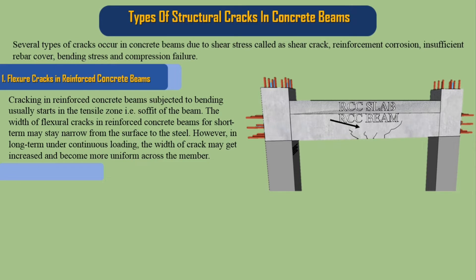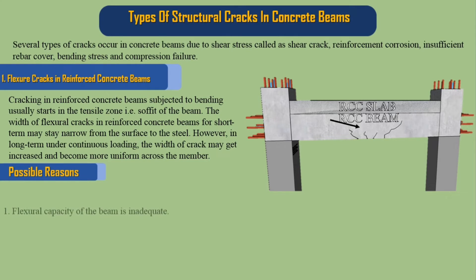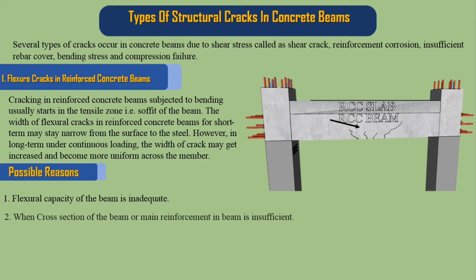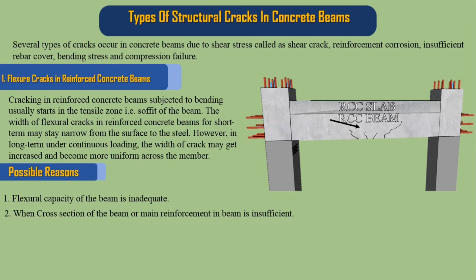Possible reasons for flexure cracks: 1. The flexural capacity of the beam is inadequate. 2. The cross-section of the beam or main reinforcement in the beam is insufficient. 3. The beam is loaded more than the defined design loads.